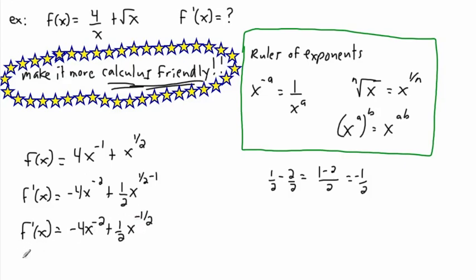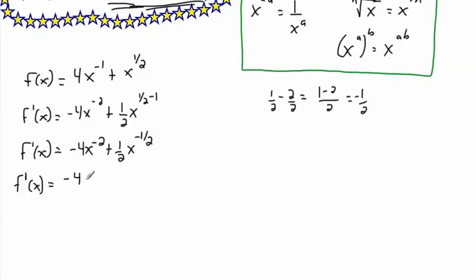You could say that you're done, but let's pretty it up a little bit and move it back to proper form. The negative 4 is still in front — remember, that negative doesn't mean a negative exponent; it's just negative 4 as a number. It's only negative exponents that make things drop down. So x to the power of negative 2 is the same as 1 over x squared. And 1/2 times x to the power of negative 1/2 is like saying 1 over 2 times x to the power of 1/2 — dropping it down makes the exponent positive.